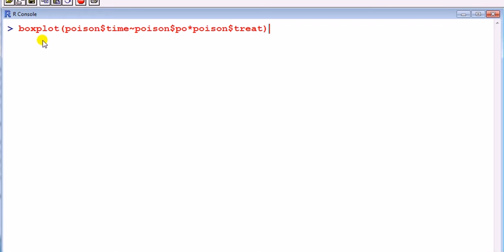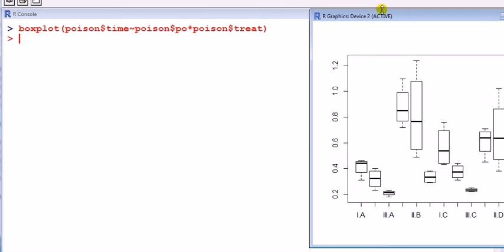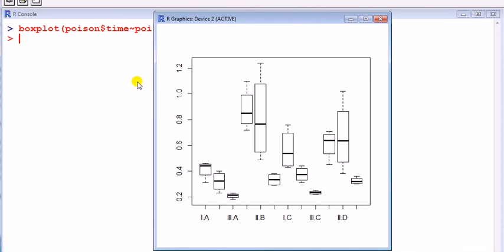First, ANOVA, we need to see whether some of the conditions are satisfied. You can get an idea of whether it's satisfied by looking at the box plot.